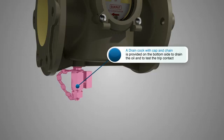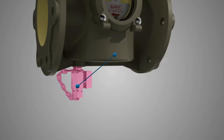A drain cork with cap and chain is provided on the bottom side of BR body to drain the oil from the BR and to test the trip contact.